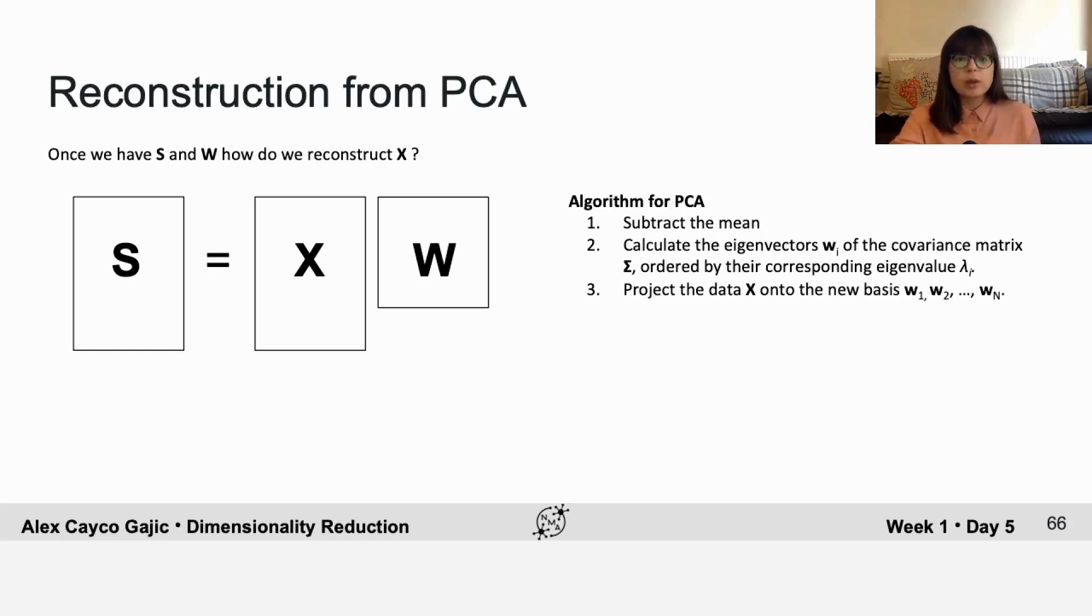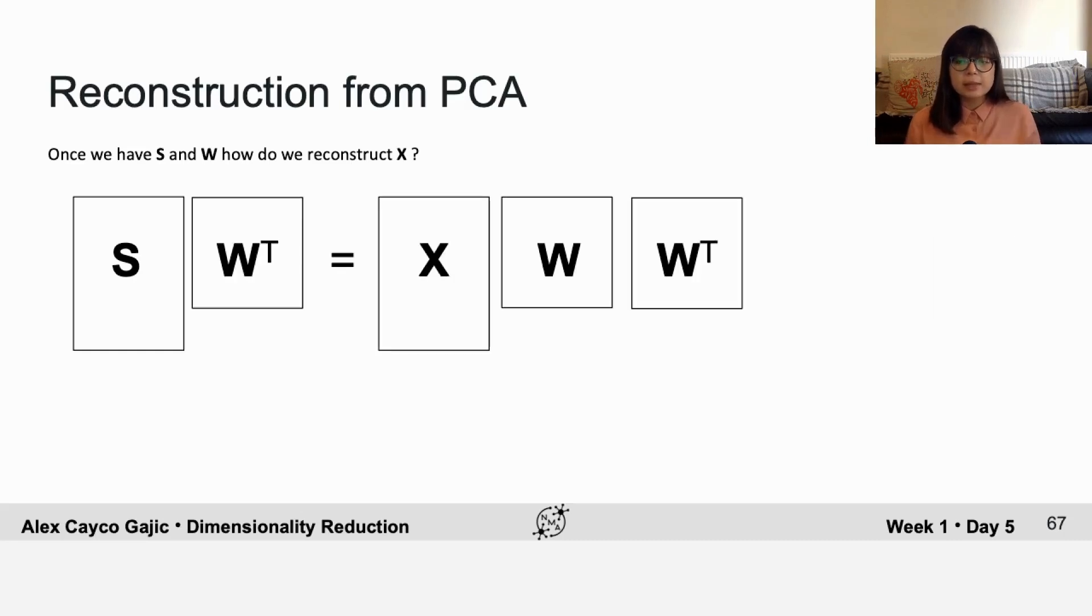To do this, we'll multiply both sides of this equation by W transpose. And let's think a bit about what this W W transpose on the right is going to return. If you think about the off diagonals of this matrix, that'll be the dot product of basis vector i and basis vector j, and that's going to give you 0 because they're orthogonal.